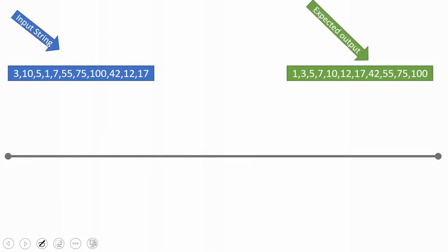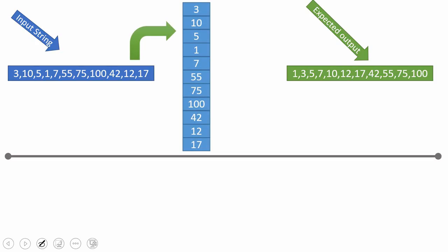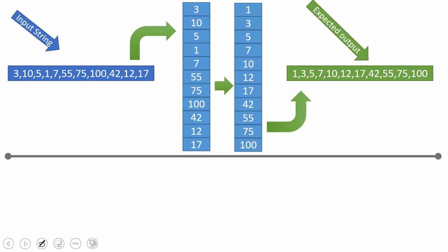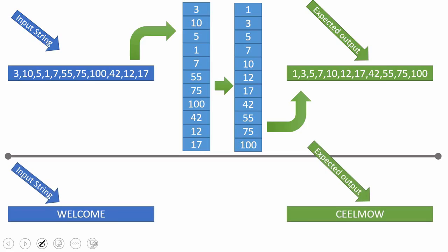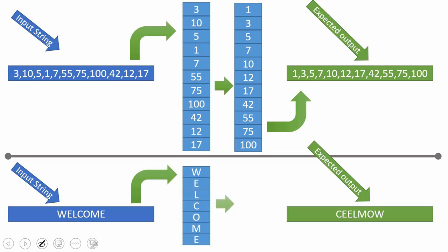Let me first show the logic I'm going to follow. The expectation is to sort numbers in a comma-separated string. What I'm going to do is convert the comma-separated data into a row-wise format so it's easy to sort. After sorting, I'll convert it back to comma-separated format using the LISTAGG function. Similarly, for the second question, I'll convert the input string into row-wise format, sort it, then aggregate back.